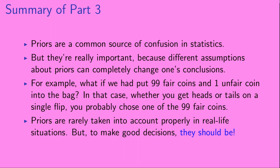Priors are a common source of confusion in statistics, but they're really important because different assumptions about priors can completely change one's conclusions. For example, what if we had put 99 fair coins and one unfair coin in the bag? In that case, whether you get heads or tails on a single flip, you probably chose one of the 99 fair coins. Priors are rarely taken into account properly in real-life situations, but to make good decisions, they should be.